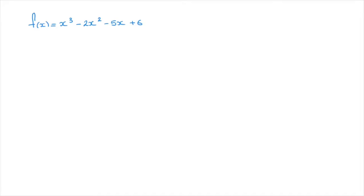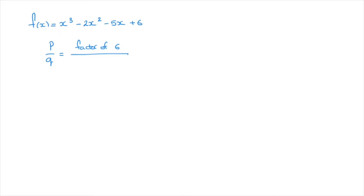What the rational root theorem states is that if any of the zeros of this polynomial function are rational numbers — we call them rational roots or rational zeros — then they must be of the form p over q, where p is a factor of the constant term at the end, so in this case 6. And q is a factor of the leading coefficient, so in this case the 1 that's multiplying the x cubed.